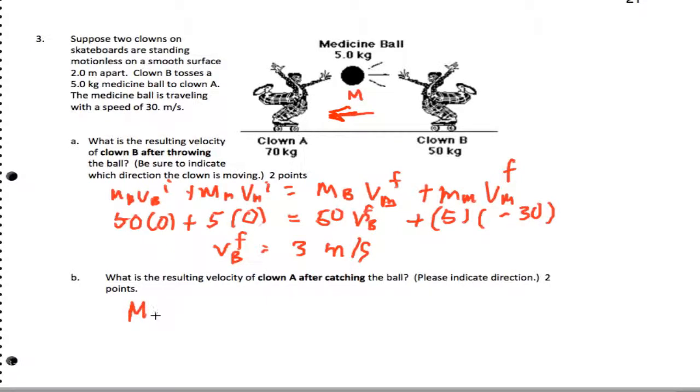And then they catch and move together. So MA VA initial plus M with the medicine ball, V the medicine ball initial, equals their final momenta combined. That's just a short way of saying it.